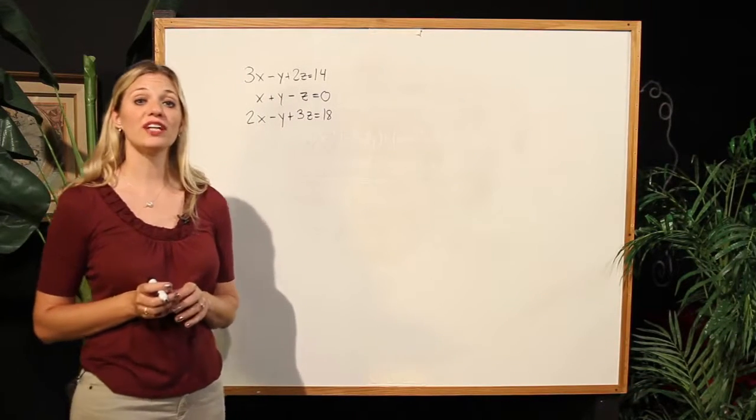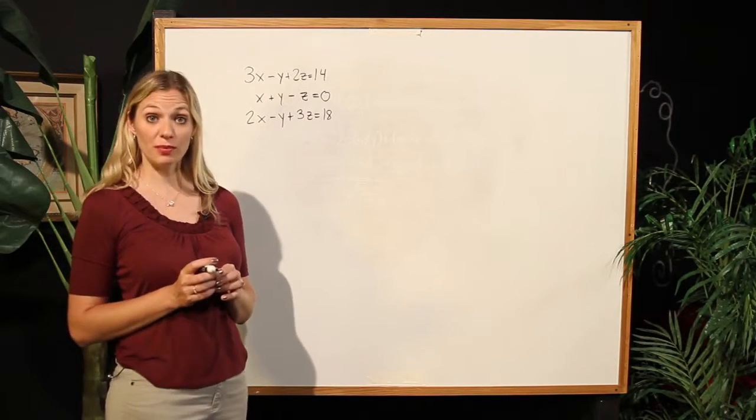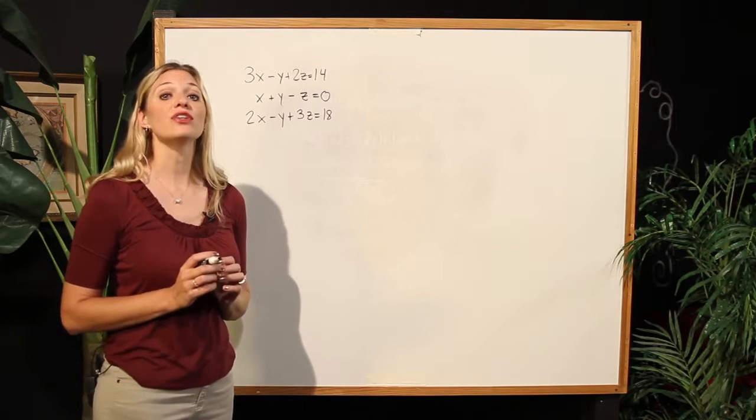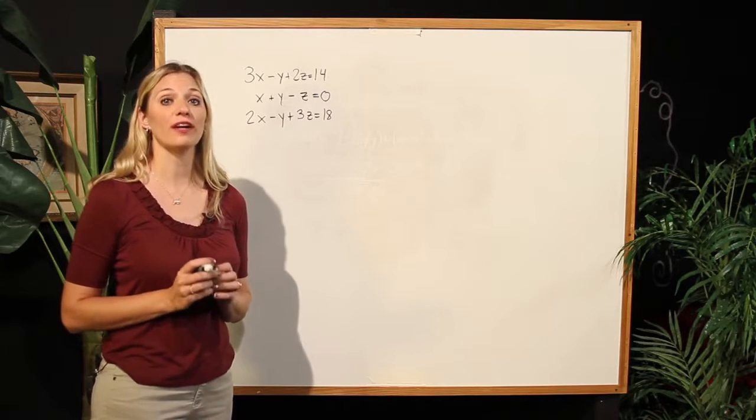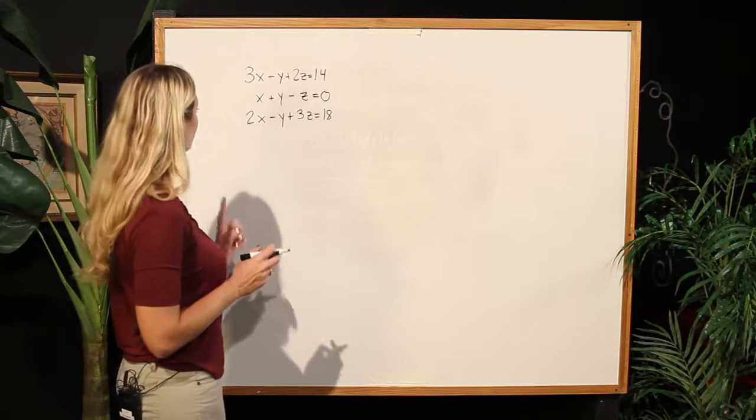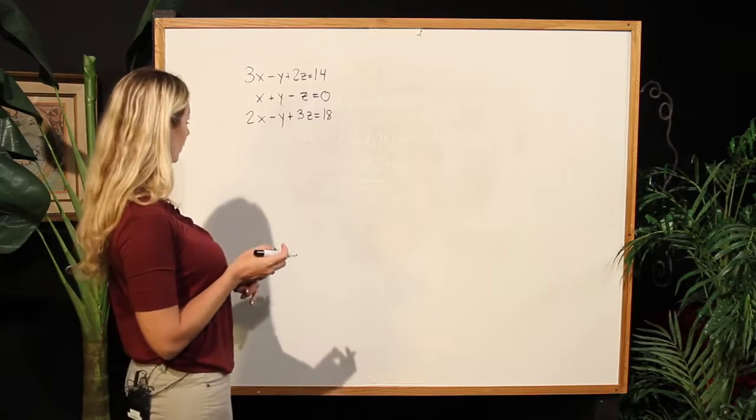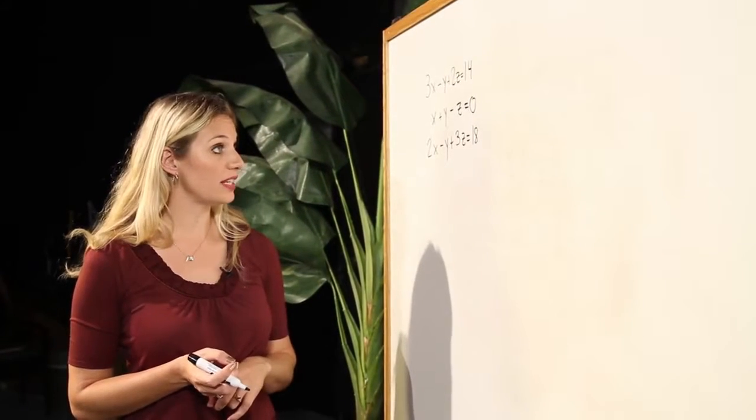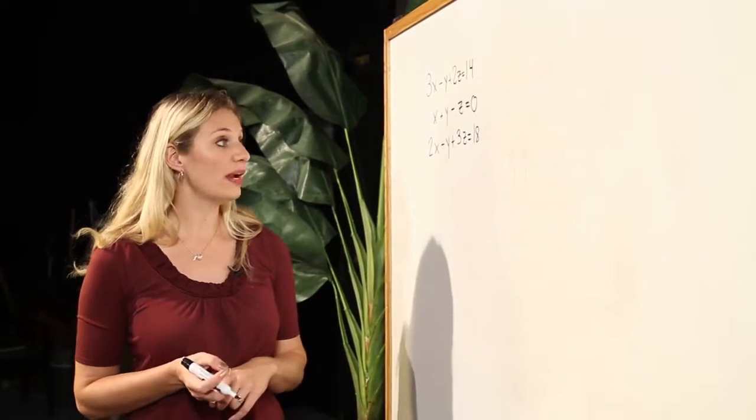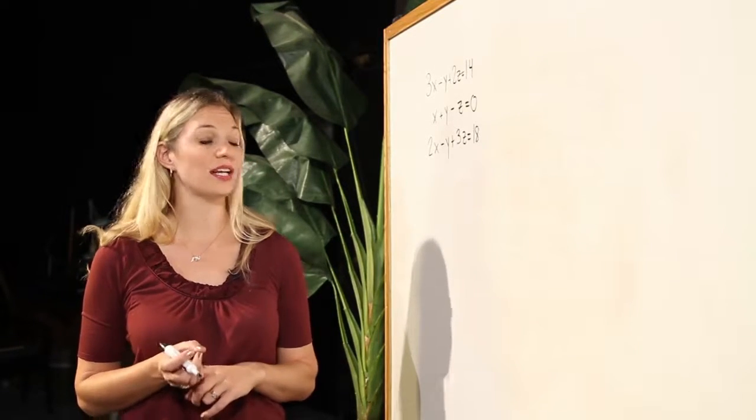In this particular exercise, we are going to solve a system of equations that has three equations and three variables. We have 3x minus y plus 2z equals 14, x plus y minus z equals zero, and 2x minus y plus 3z equals 18.